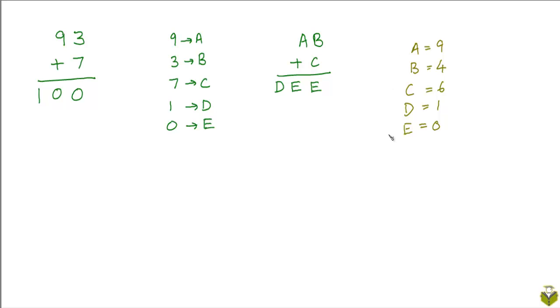But we could have had another valid solution to the same—I don't want to call it a cryptarithm because a cryptarithm should have a unique solution. We could have had a different solution to the same puzzle.